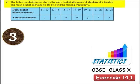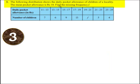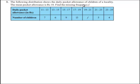Here the given problem is: the following distribution shows the daily pocket allowance of children of a locality. The mean pocket allowance is rupees 18. Find the missing frequency. The data is given in tabular form showing the daily pocket allowance in rupees as group data and number of children as frequencies. We have to find the missing frequency.